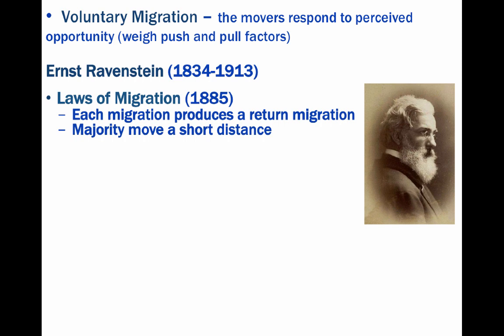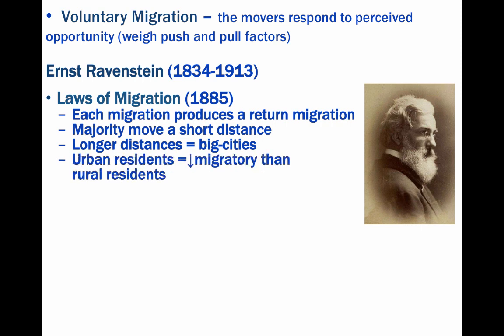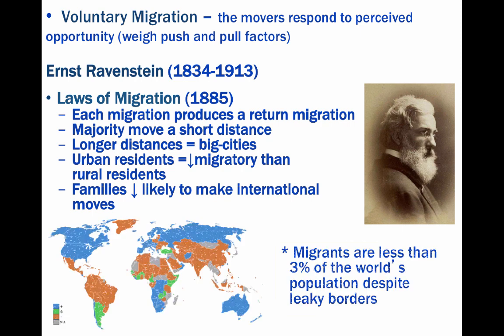For example, the case in China of rural to urban migration is especially distinct. Another law states that long-distance migrants go to one of the great centers of commerce and industry — big cities — and that natives of towns and cities are less migratory than those from rural areas. Bear in mind that most migrants are young adults and families are less likely to make international moves. Today, migrants are less than 3% of the world's population despite better transport technology and leaky borders.